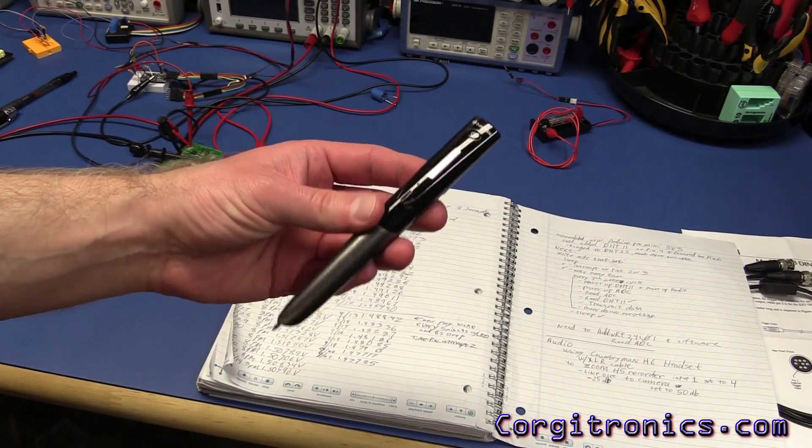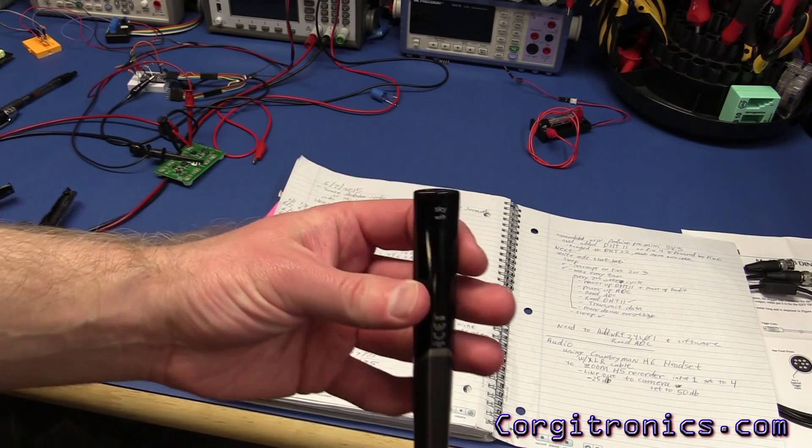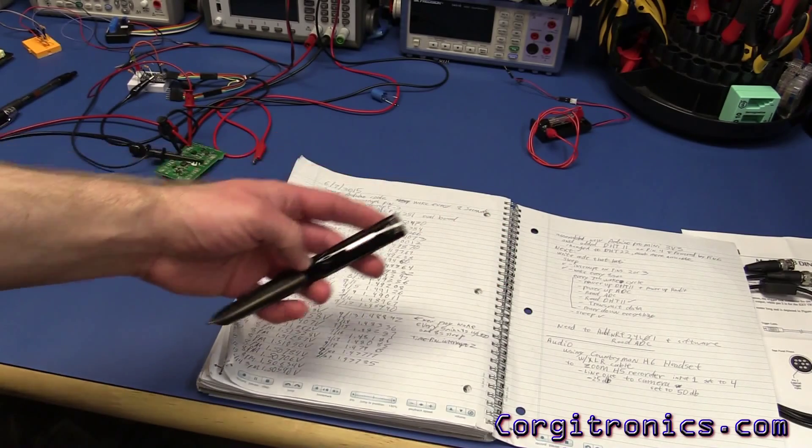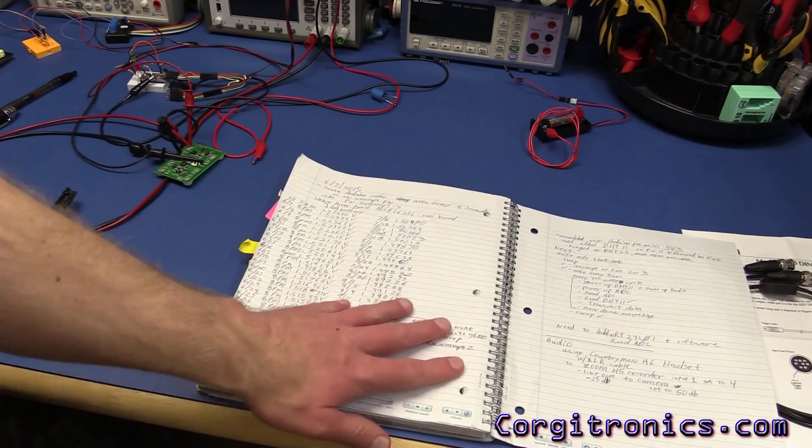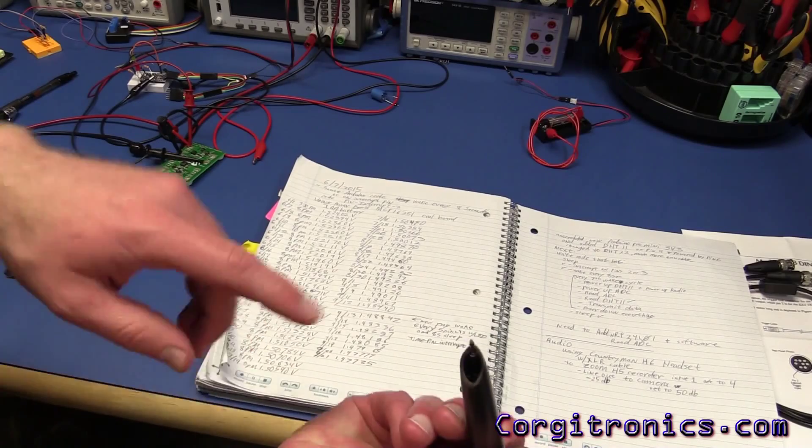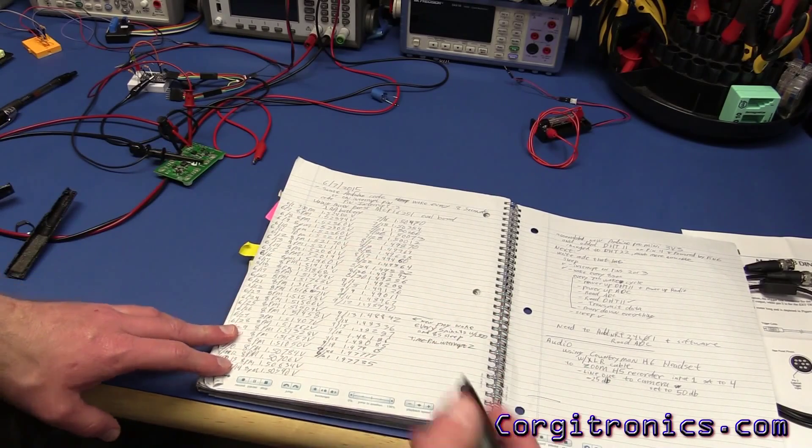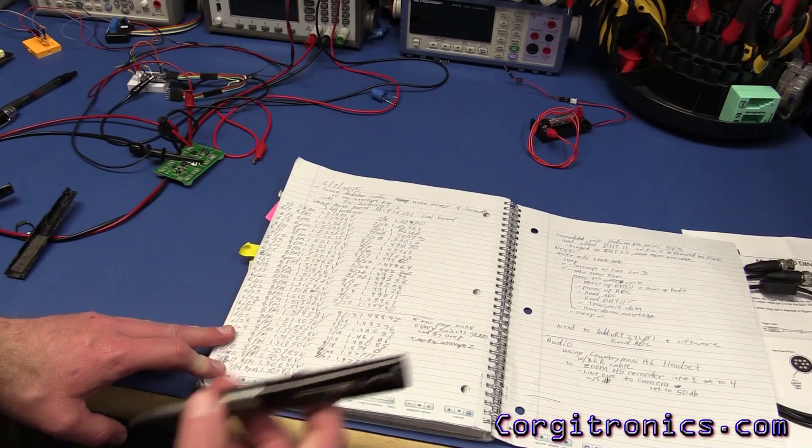This is the Livescribe Wi-Fi, also called the Sky Pen. What this does is it recognizes a micro dot pattern on the paper with a small camera right in here, and as you press and write, it picks that up, records it.